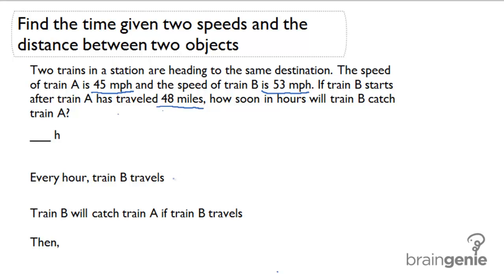So for every hour, train B is going to travel 53 minus 45 or 8 miles more than train A. Train B will catch train A if train B travels a total of 48 miles.